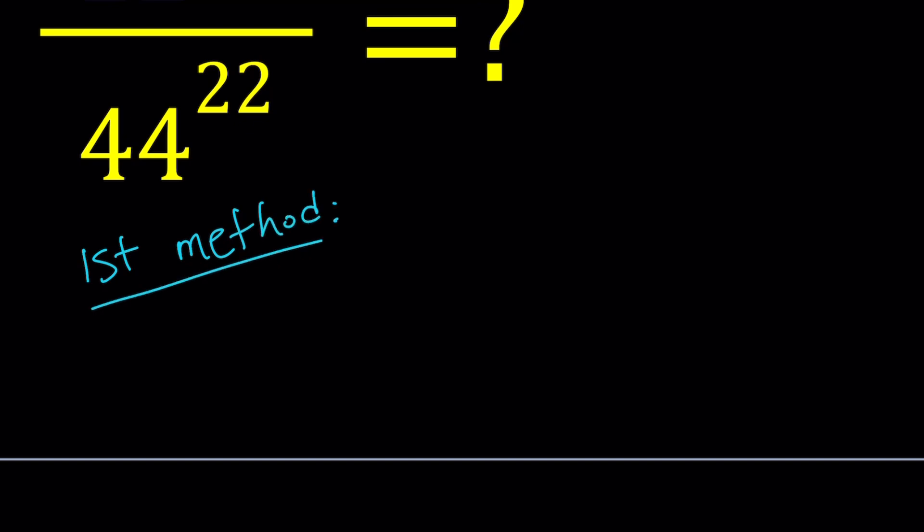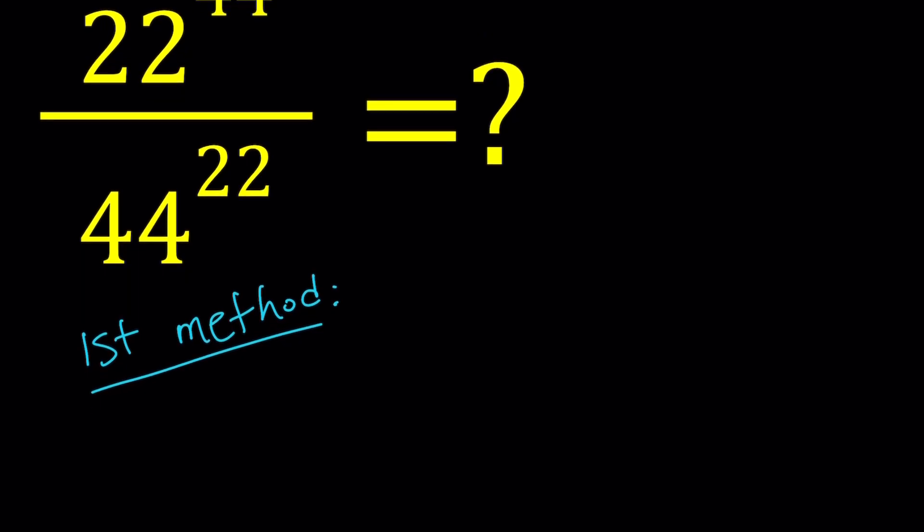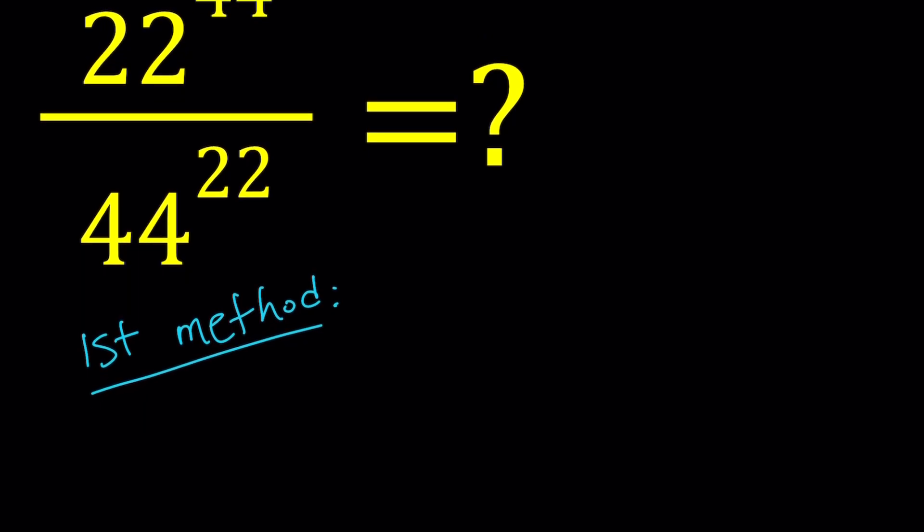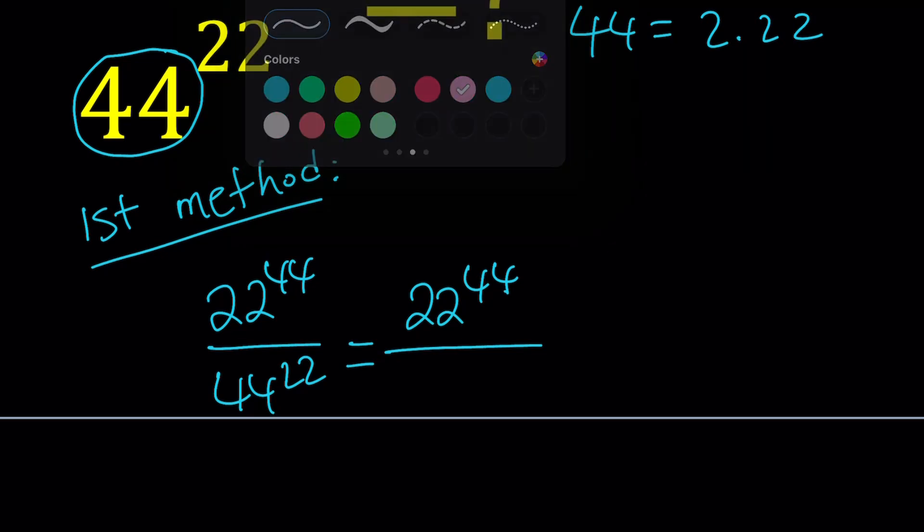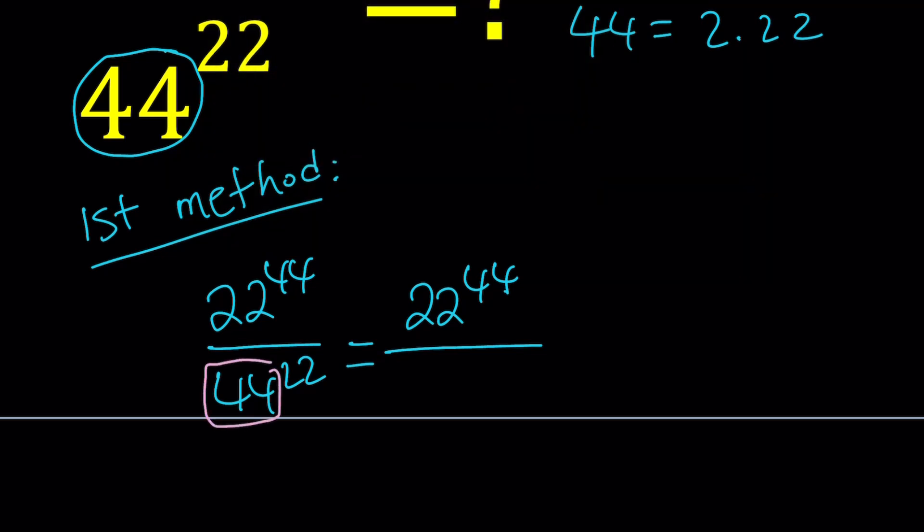I'm pretty sure you're going to come up with different methods for this too. For my first method, I'm going to break down the base in the denominator. Notice that 44 is 2 times 22, so that's good to know. We can write it as 22 to the power 44 divided by, and I'm going to break the denominator down into 2 times 22, then raise it to the power 22.